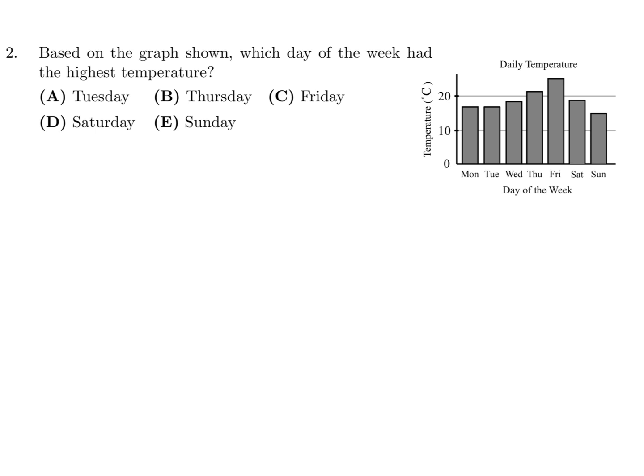Based on the graph shown, which day of the week had the highest temperature? This question is basically asking you to interpret this graph. So this part is the temperature, and this part, of course, is the days of the week, as they have labeled. And the highest temperature looks like that day, and that corresponds to Friday. So number 2, the answer would be C.